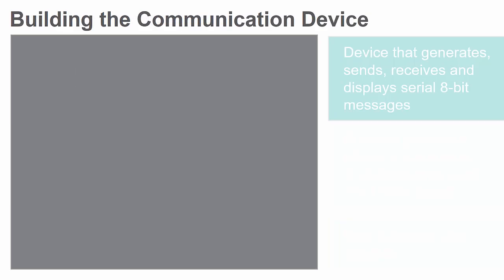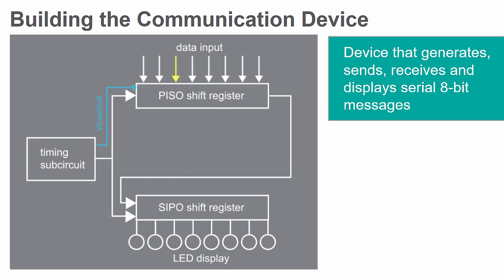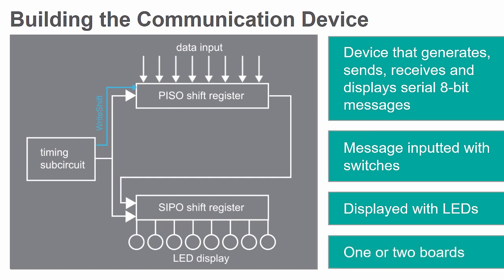In this lab, you will build a communication device that generates, sends, receives, and displays serial 8-bit messages. The messages will be input with switches and displayed with 8 LEDs on the DSDB board. The communication can be between two DSDB boards or on the same board.